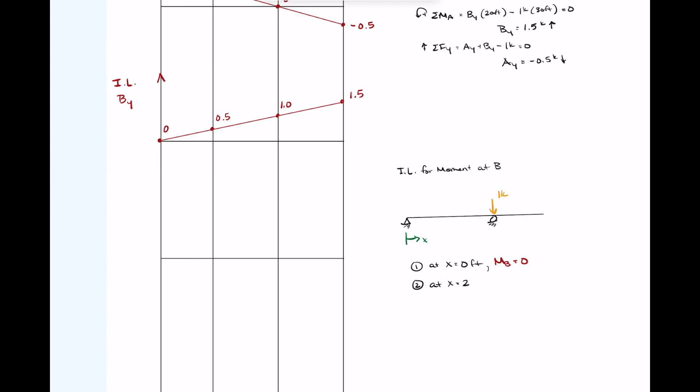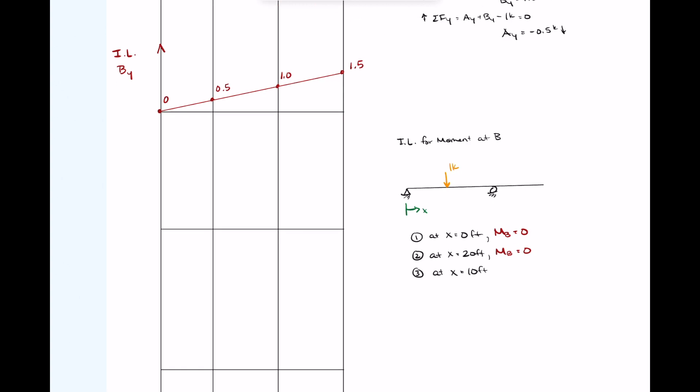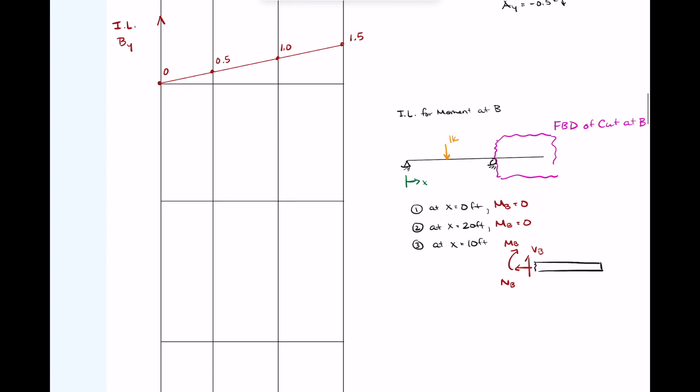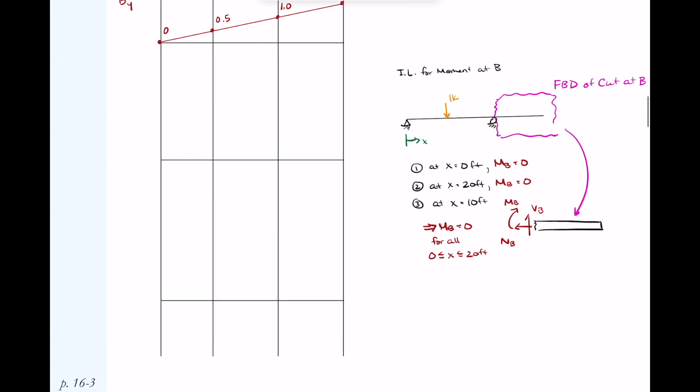When I look at x equals zero feet, moment B is zero. When x equals 20 feet, moment B is also zero. Basically, when the value is over support directly, there's no bending going on in our structure. I can look at x equals 10 feet, halfway down the length. Now I want to study a free body diagram. I could have done this for positions one and two as well. When I draw this free body diagram, I'm looking inside that magenta circle and draw my internal forces using my positive sign convention. Right now the one kip load is not there and I have no other loads acting on this. If I sum moments about B, I get that moment B is zero for all cases. Whenever the one kip load is not in this free body diagram, I don't have a moment at point B. So that means it's zero from x equals zero to 20 feet.